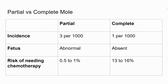There are some differences between partial and complete molar pregnancy. Partial molar pregnancy is more common. There may be a fetus, which can be abnormal, or sometimes just a sac, whereas in a complete mole there is an absence of fetal material. The risk of needing chemotherapy is also increased for complete molar pregnancies at around 13 to 16%.